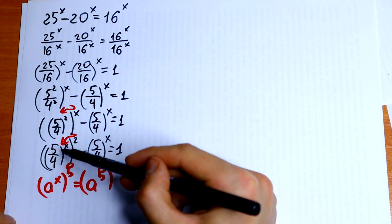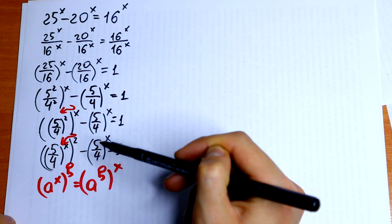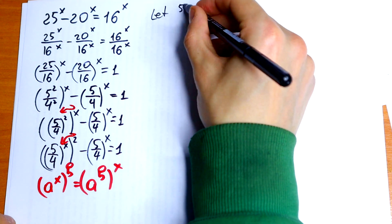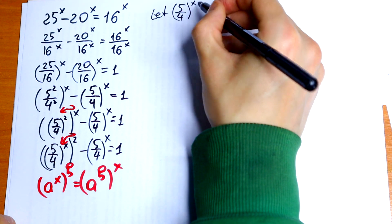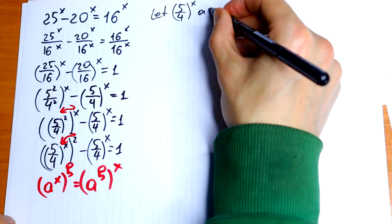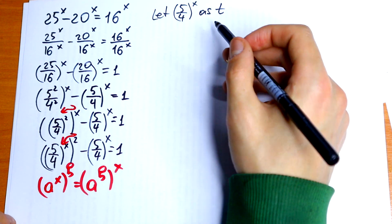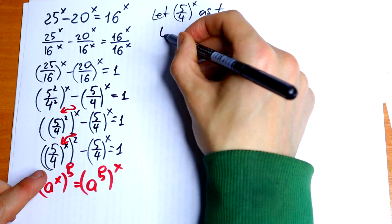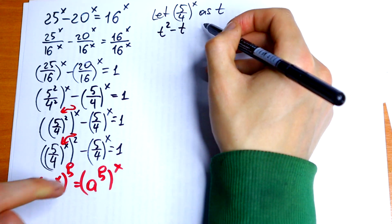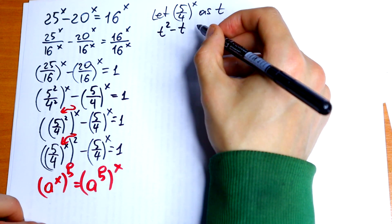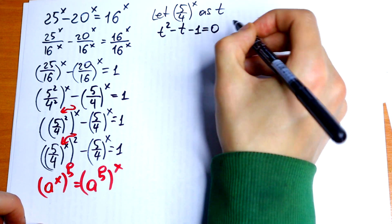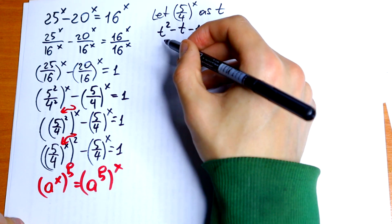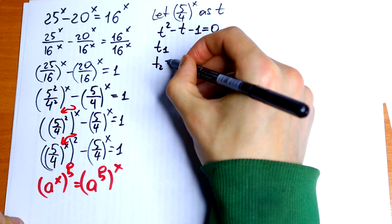I see that 5 over 4 to the power x appears in both terms, so I can use a substitution. Let t equal 5 over 4 to the power x. So I will get t squared minus t, and dropping the 1 to the left side, minus 1 equal to 0. This is a classic quadratic equation. So t₁ and t₂ will be equal to the roots we need to find.